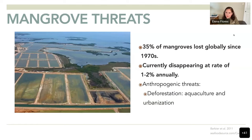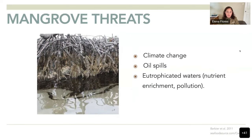However, we have lost 35 percent of our mangroves since the 1970s, and they are currently disappearing 1 to 2 percent annually. Major threats include humans through aquaculture and urbanization, climate change, oil spills, and eutrophication — which means having excess nutrients and pollution near coastal areas.